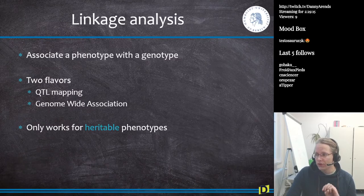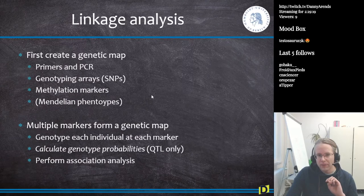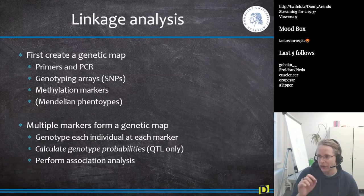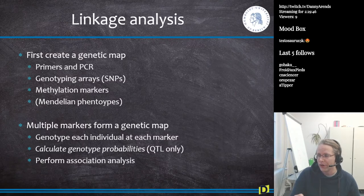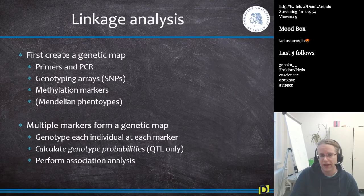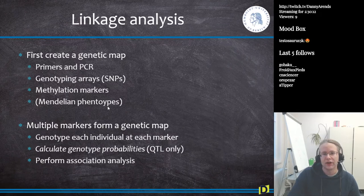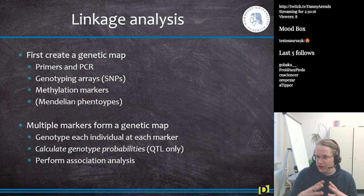QTL mapping uses one of these structured populations. First we need to create a genetic map. We can use primers or PCR, or generally a genotyping array to measure single nucleotide polymorphism sites - checking if individuals are AA, AT, or TT at points on the genome. We can also use methylation markers, looking at whether DNA is methylated or unmethylated. We can also build genetic maps from Mendelian phenotypes, since a Mendelian phenotype is controlled by a single locus. Multiple markers together form the genetic map.